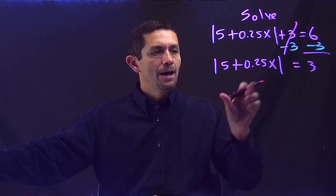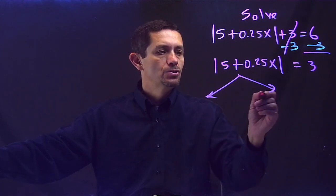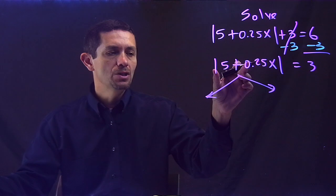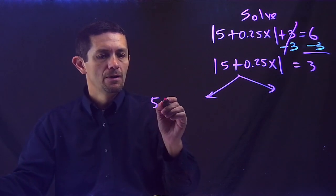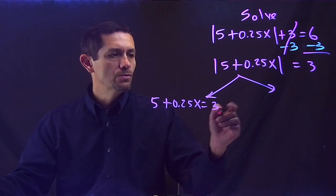So at this point, the absolute value is by itself, and now I want to solve using two equations. Again, the inside of the absolute value will never change. So I'm going to bring here the 5 plus 0.25x equals 3.